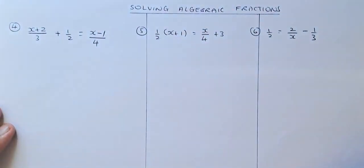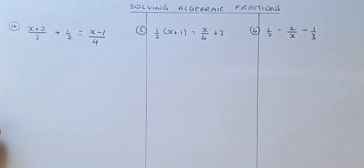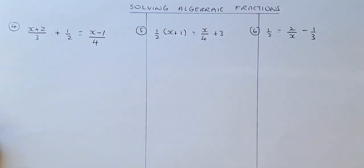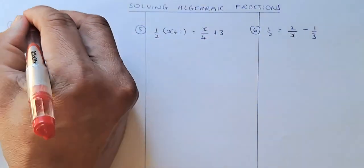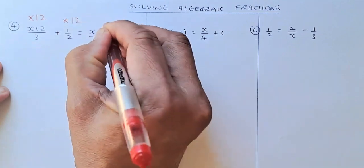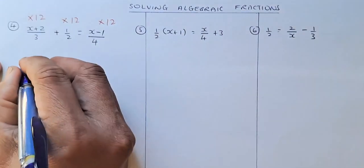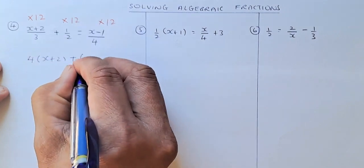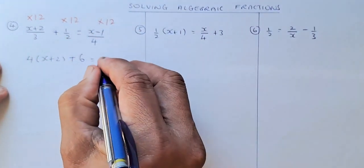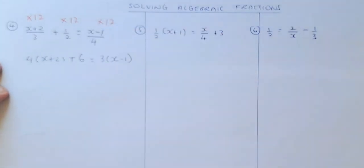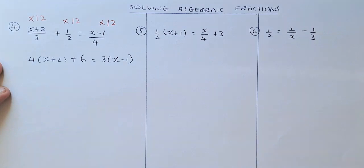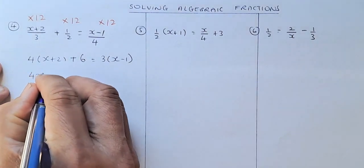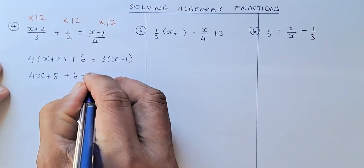Now we're going to do the three hardest examples. The next example is x plus 2 over 3 plus a half equals to x minus 1 over 4. The lowest common denominator is 12, so you multiply by 12 in each term. When you multiply by 12, 12 divided by 3 is 4, giving 4 bracket x plus 2. The second term gives plus 6 because 12 divided by 2 is 6. The next term gives 3 bracket x minus 1 because 12 divided by 4 is 3. Expanding: 4x plus 8 plus 6 equals to 3x minus 3.